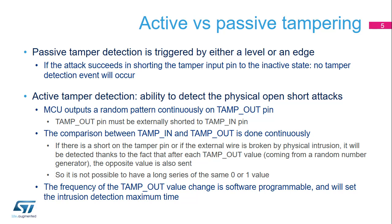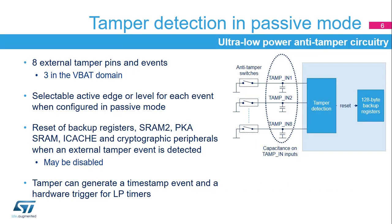A TAMP OUT pin must be externally shorted to a TAMP IN pin. Tamper active mode is based on the continuous comparison between a TAMP OUT pin and a TAMP IN pin. The same output can be used for several tamper inputs. The pseudo-random generator must be initially and periodically fed with a new seed. The TAMP embeds ultra-low power tamper detection circuitry, to detect physical tampering in a secure application and to automatically erase sensitive data in case of intrusion.